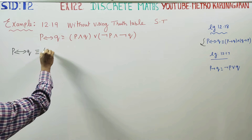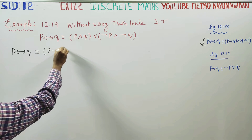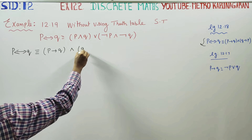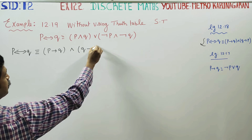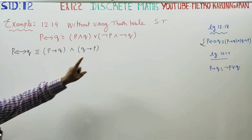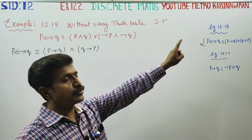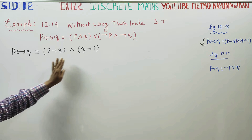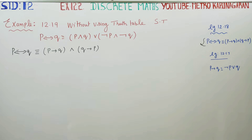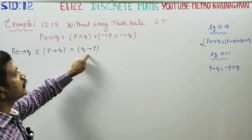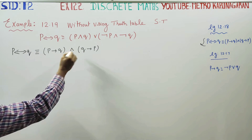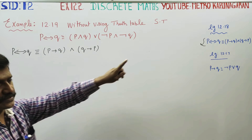If P then Q, and if Q then P. In the formula, the references are from example 12.18 — the proof is already done. Looking at the biconditional and conditional, it is two-fold, and this is the proof that you use.